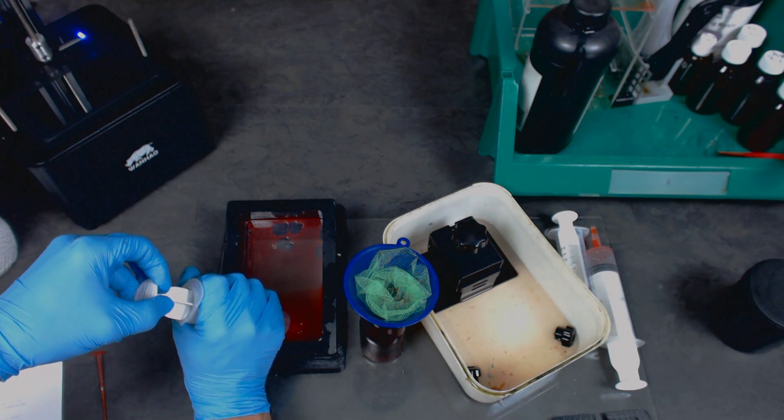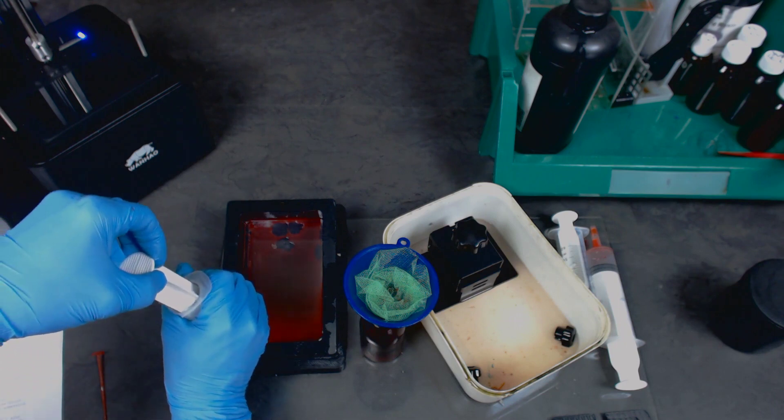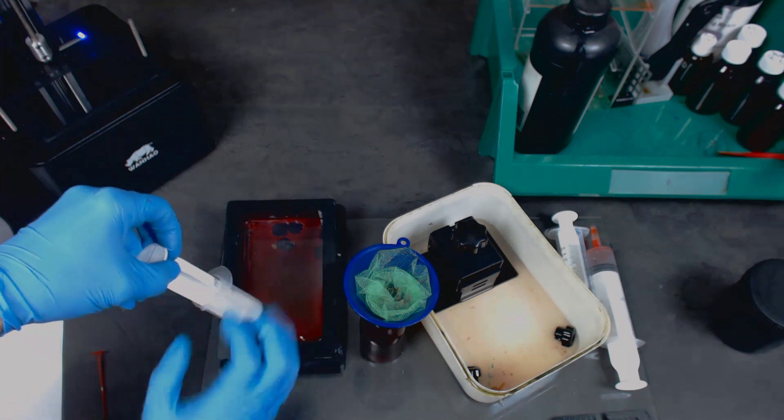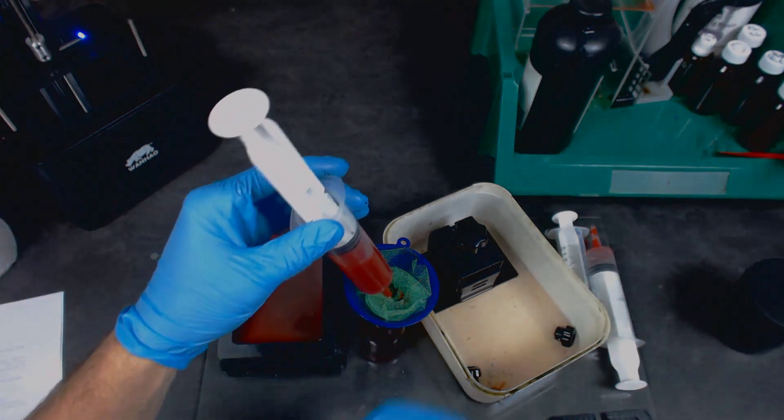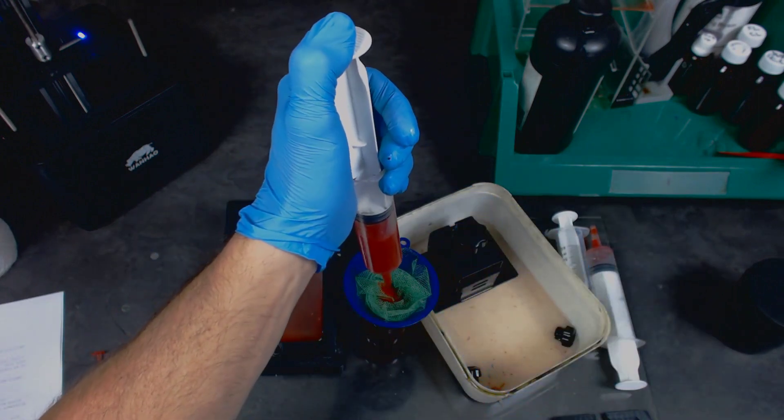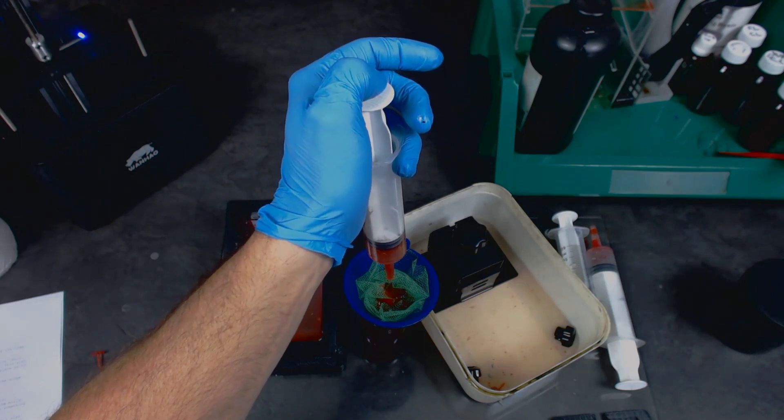I use this syringe with a large bore to draw the resin out of the vat. I then place used resin in an opaque bottle that will prevent it from curing in that bottle. I do this via this funnel, which I have some fine mesh in.